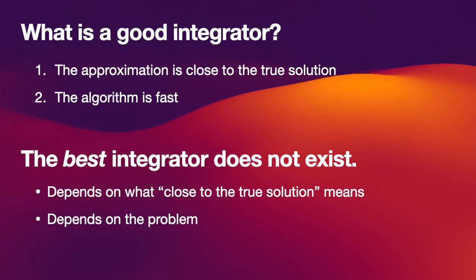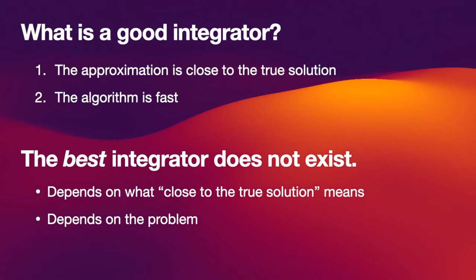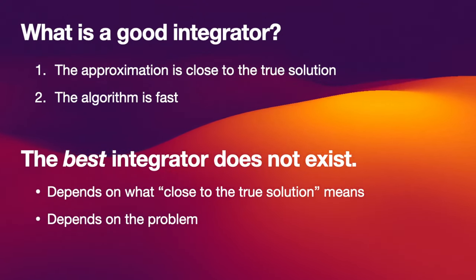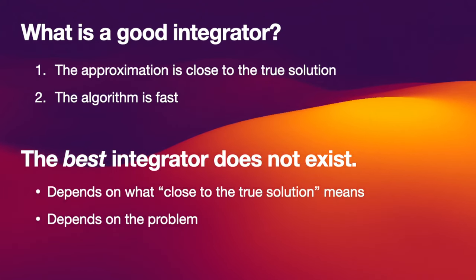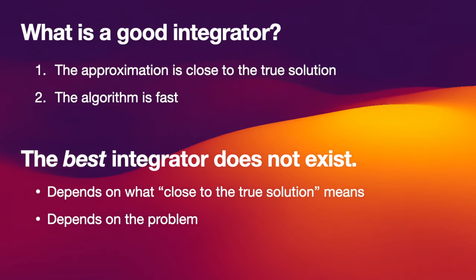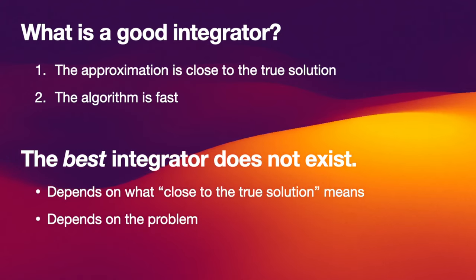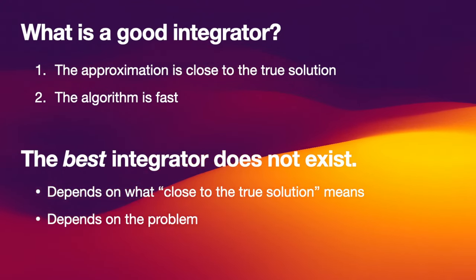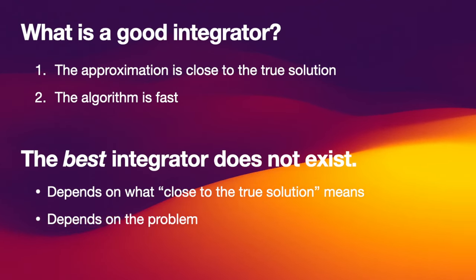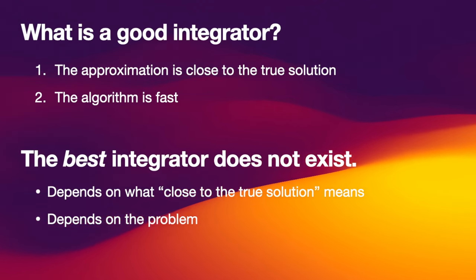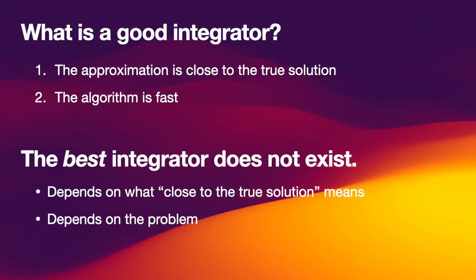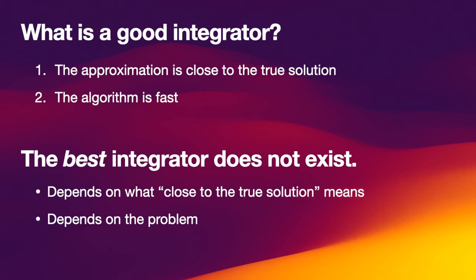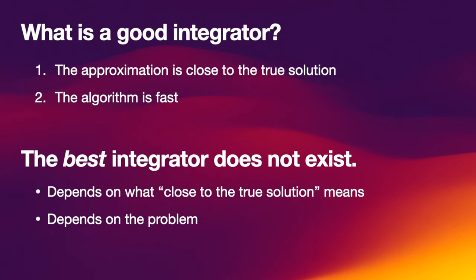When choosing an integrator, you want to find a good one. The first criterion is that the approximation we get should be close to the true solution. The second criterion is that the algorithm is fast. Measuring speed is straightforward — you just measure the runtime between different integrators to find out which one is faster.